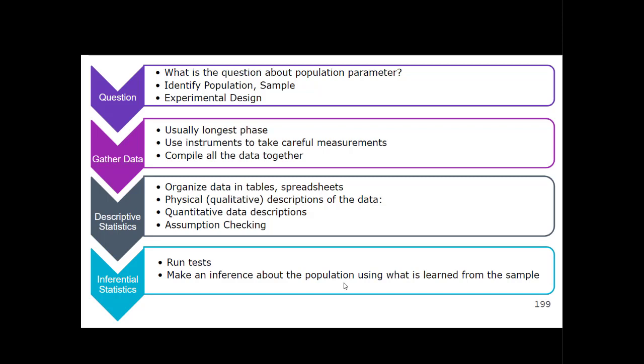You want to make sure you're taking careful measurements and storing them safely. If it needs to be confidential, that information is kept confidential. You're starting to compile all the data together — this can take anywhere from days to years. Descriptive statistics is a lot of what we did in the first part of stats. You're taking all your raw data from the second phase and starting to organize it in tables and spreadsheets, and describing the participants of the sample using qualitative descriptions like gender, race, and living environment.